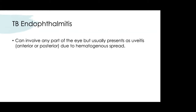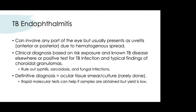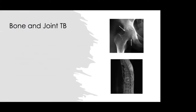TB endophthalmitis can involve any part of the eye but usually presents as uveitis — anterior or posterior — due to bloodstream spread. A clinical diagnosis can be made based on risk exposure, known TB disease elsewhere, a positive TB infection test, and typical choroidal granuloma findings. Rule out syphilis, sarcoid, and fungal infections, which can look similar. Definitive diagnosis requires ocular tissue cultures sent for AFB.